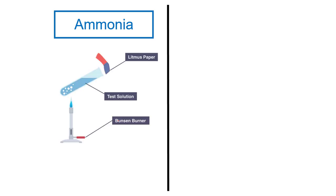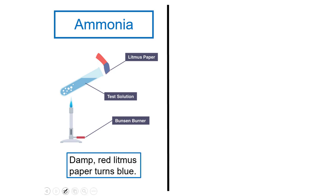The test for ammonia gas is by using a damp red litmus paper. It turns blue. Here we have a damp red litmus paper — once we close it to the mouth of a tube that produces ammonia gas (NH3), the color turns blue.